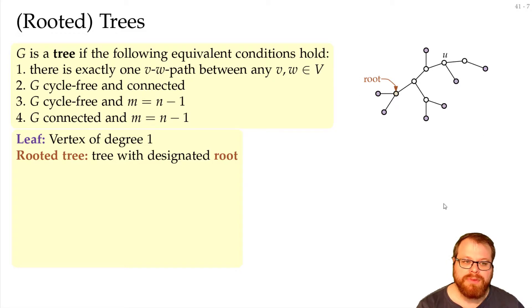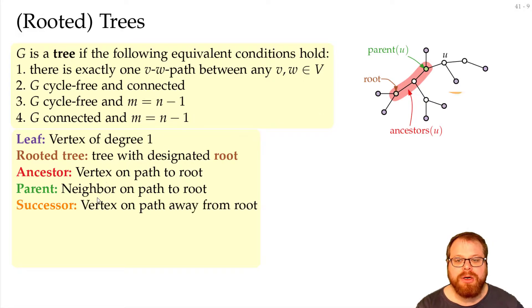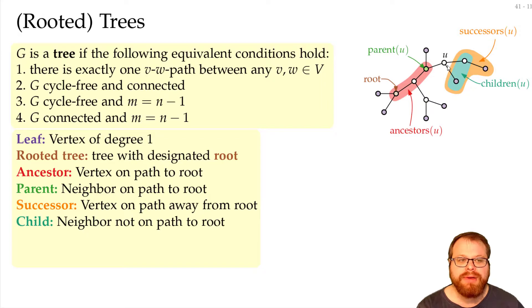Now if we look at a single vertex, it has some relation to other vertices. For example, there are the ancestors. Those are all the vertices on the path to the root. And the neighbor on the path of the root is the parent. We have successors, that's basically the opposite. Those are the vertices on the path away from the root. And the neighbors here are the children.